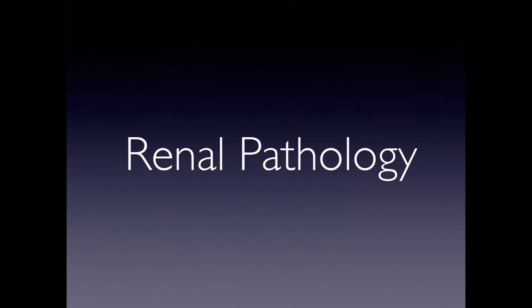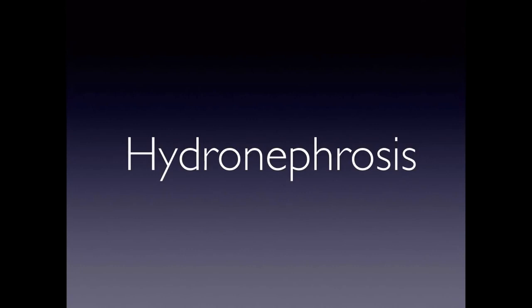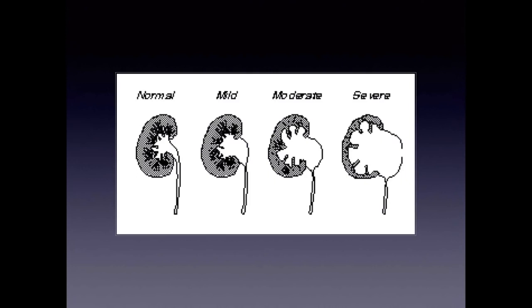The biggest pathology of concern is hydronephrosis. There are varying degrees: normal, mild, moderate, and severe. This is somewhat subjective, but in severe hydro you'll see thinning of the renal cortex. Studies found a relationship between degree of hydro on ultrasound and ureteral stone size on CT. If the patient is extremely dehydrated, you may see no hydro, which does not rule out a stone — you can hydrate the patient and re-scan.